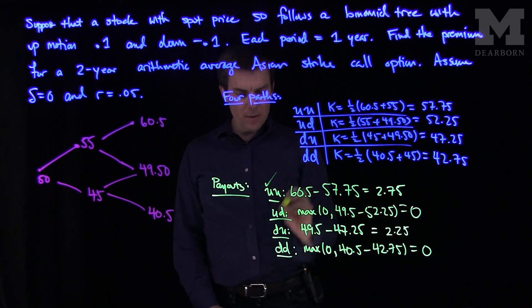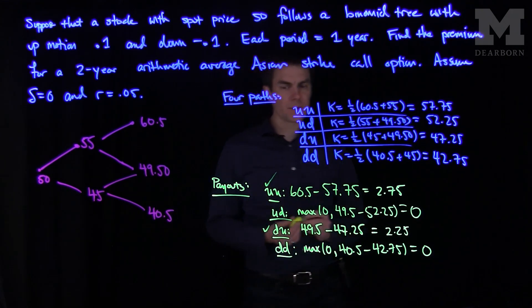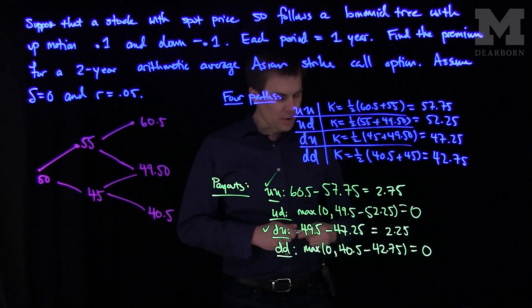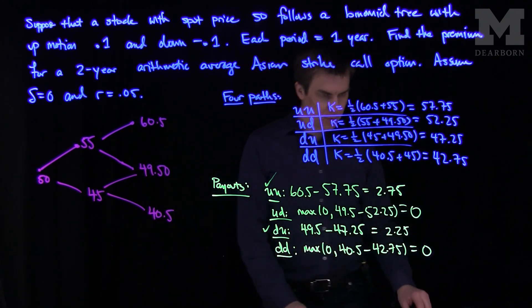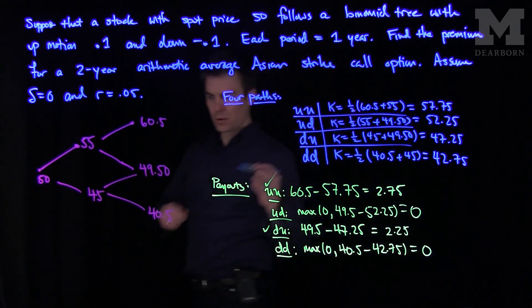So on the up-up node we get a payout, on the down-up node we get a payout. So we get two payouts and we have to bring those back with interest. So now the next thing to do is to compute the risk-neutral probability.